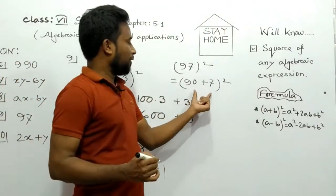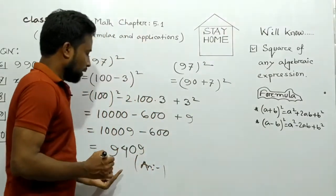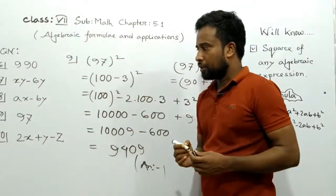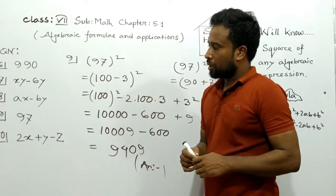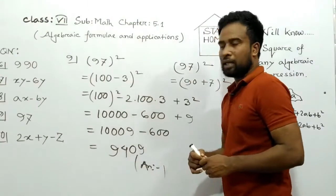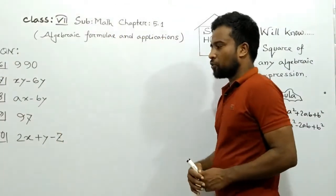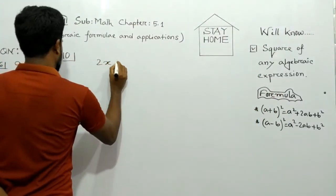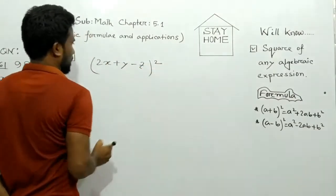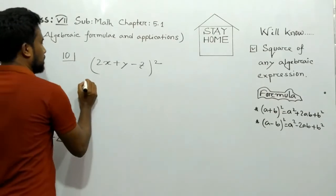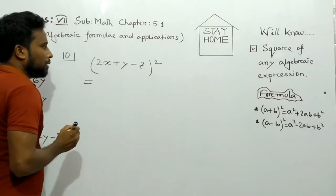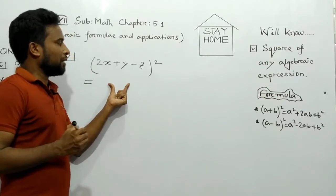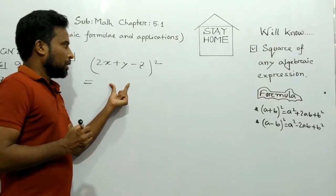We can also write 97 as (90 + 7) and apply the (a + b)² formula to get the same answer. Our next and last expression is number 10: (2x + y - z)². We can apply two formulas — the (a + b)² formula or the (a - b)² formula.